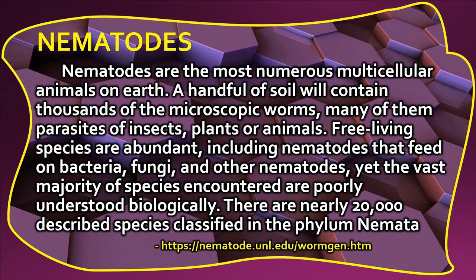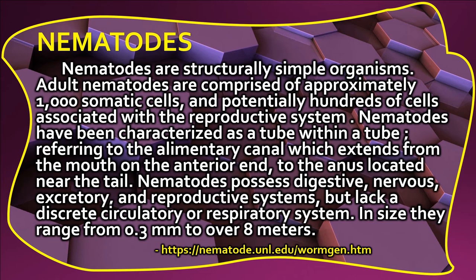Nematodes are structurally simple organisms. Adult nematodes are comprised of approximately 1,000 somatic cells and potentially hundreds of cells associated with the reproductive system. Nematodes have been characterized as a 'tube within a tube,' referring to the alimentary canal which extends from the mouth on the anterior end to the anus located near the tail. Nematodes possess digestive, nervous, excretory, and reproductive systems, but lack a discrete circulatory or respiratory system. In size they range from 0.3 millimeters to over 8 meters.